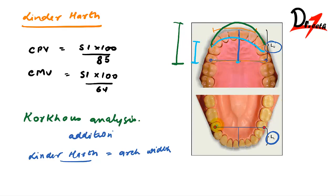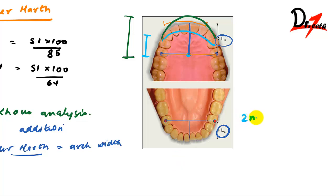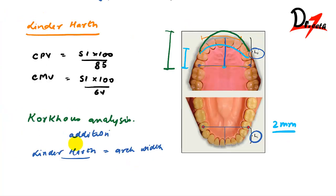Also, the value obtained in the mandibular arch should be 2 mm less than in the maxillary arch, because normally there is 2 mm of overjet. That was the Corcus analysis. In the next video we'll be studying the Ashley Howe's analysis and the Bolton's analysis.